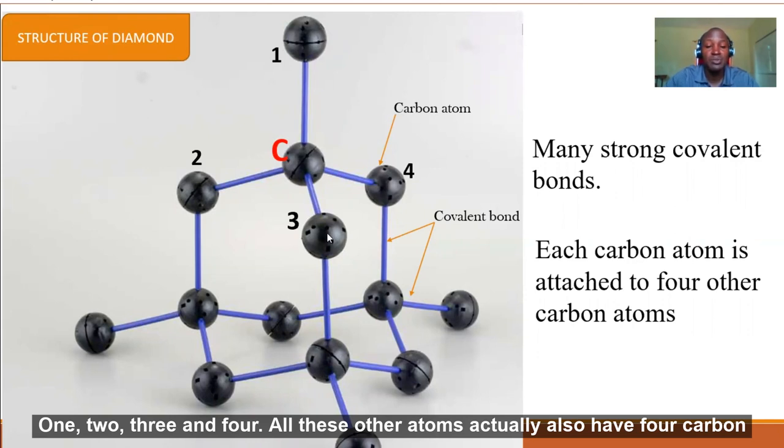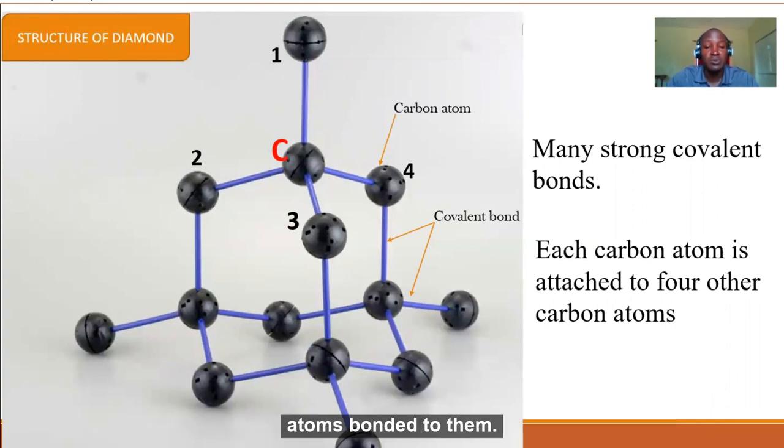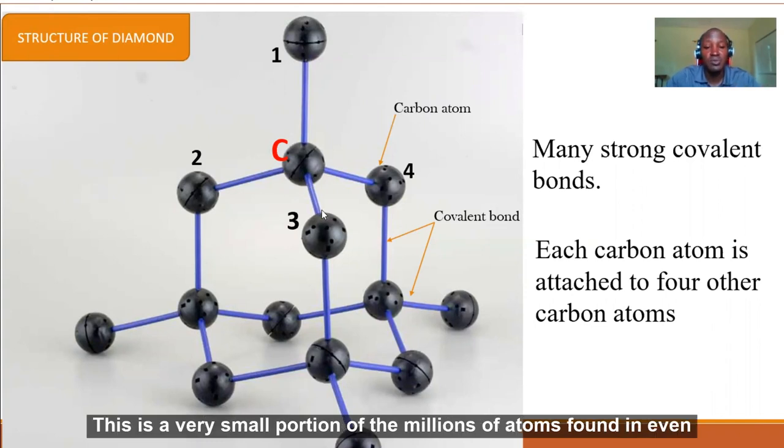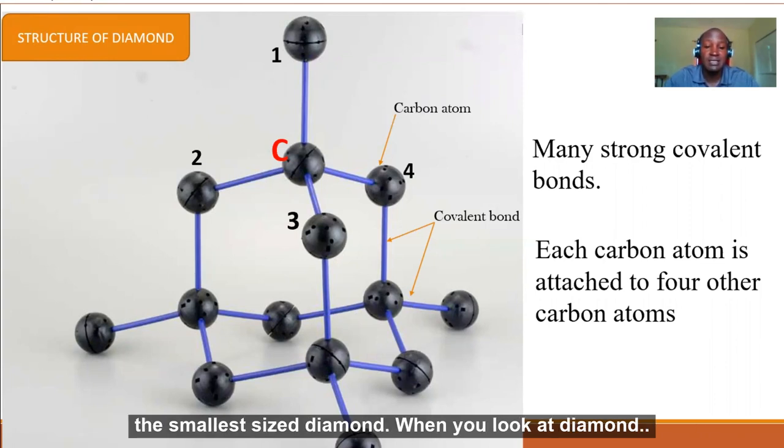All these other atoms actually also have four carbon atoms bonded to them. Just that in this image, it's hard for us to show all the four bonds. This is a very small portion of the millions of atoms found in even the smallest sized diamond. This is the structure of diamond.